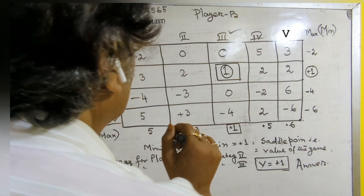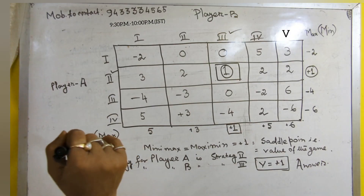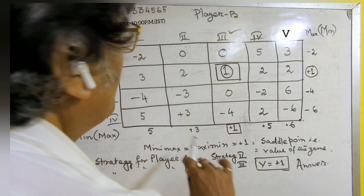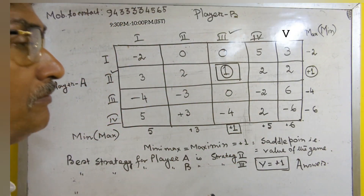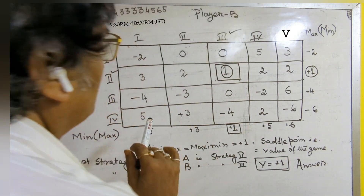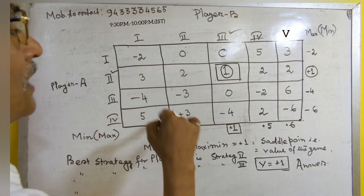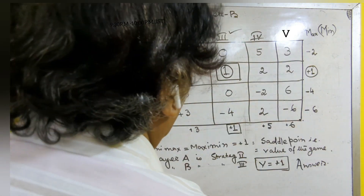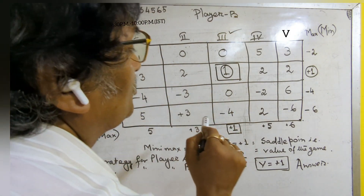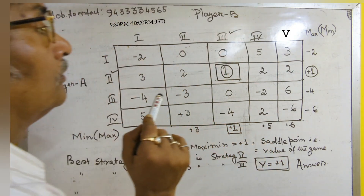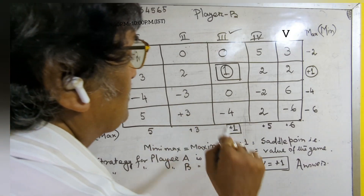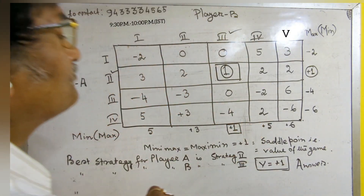We will apply the minimax and maximin theorem here. How we will proceed — we have already shown in our previous problem. Still, we are going to discuss another problem. This is a 4×5 problem and a 2-person zero-sum game, and we are going to use minimax and maximin criteria to solve it.